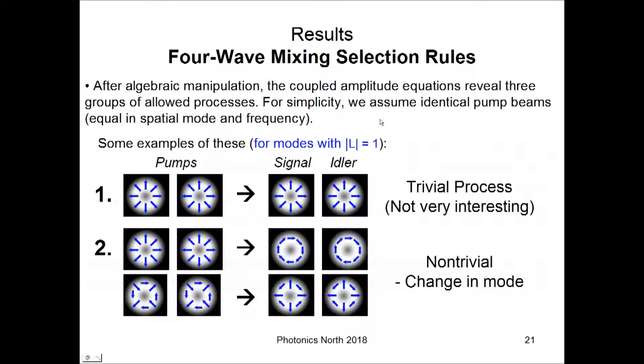After that's established, these are the selection rules. After some algebraic manipulation, these selection rules came out of the S integrals. At this point, we assume that the pump beams are identical in spatial mode and frequency because it simplifies the analysis. So, the pump beams are the same. And all of these modes, at least on this slide, correspond to an absolute value of L being 1. The selection rules do allow for processes with L having values other than 1. This is just for example.